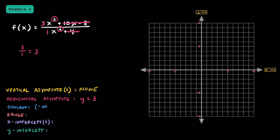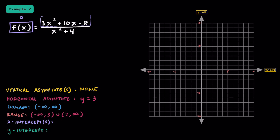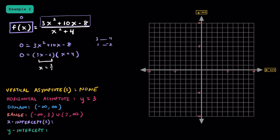Since we don't have a vertical asymptote, there's no x value that we can't have, so we have the domain of all real numbers. As for the range, we can use any y value except for 3, so we have negative infinity to 3, and 3 to positive infinity. To find the x-intercepts, we set the numerator equal to 0. So we solve 0 = 3x squared plus 10x minus 8. This factors into 0 = (3x minus 2)(x plus 4), giving us x = 2/3 and x = negative 4. Our two x-intercepts are (2/3, 0) and (negative 4, 0).